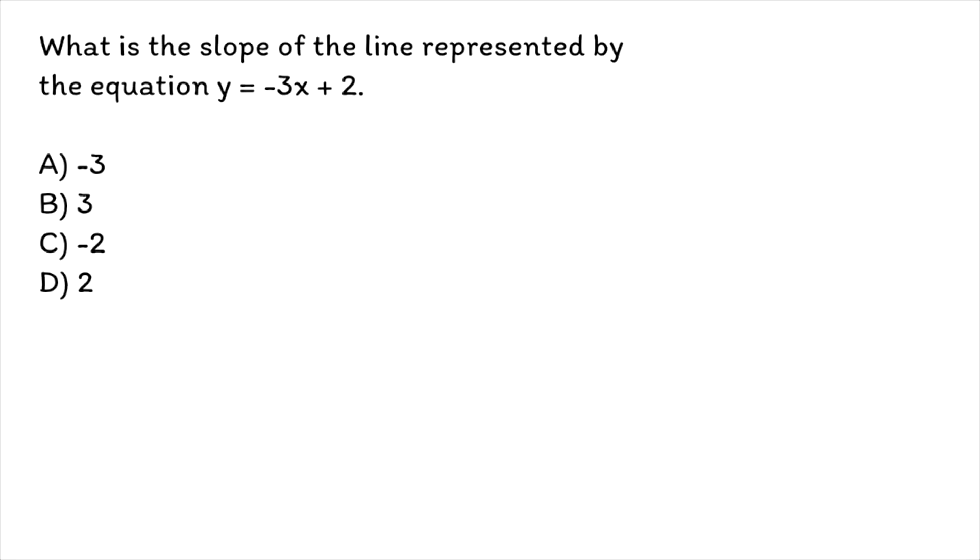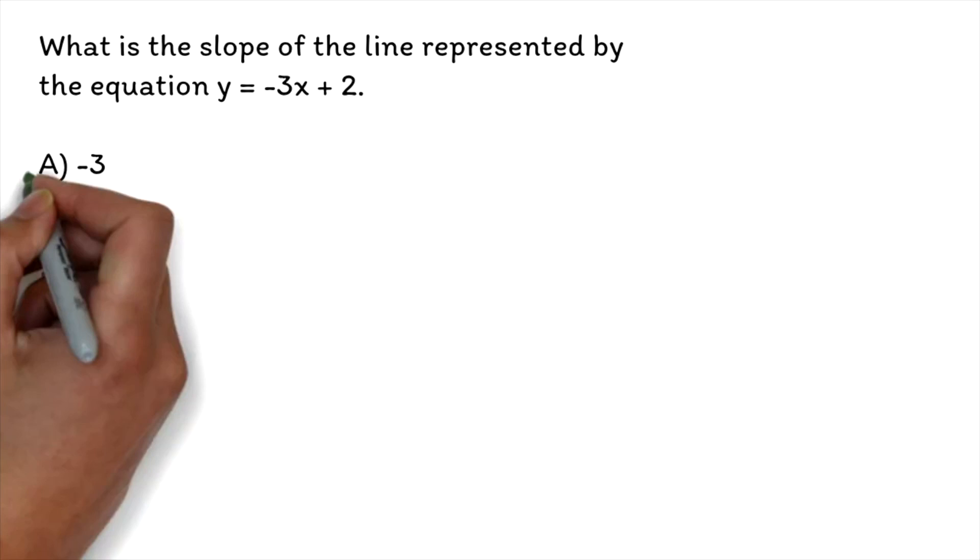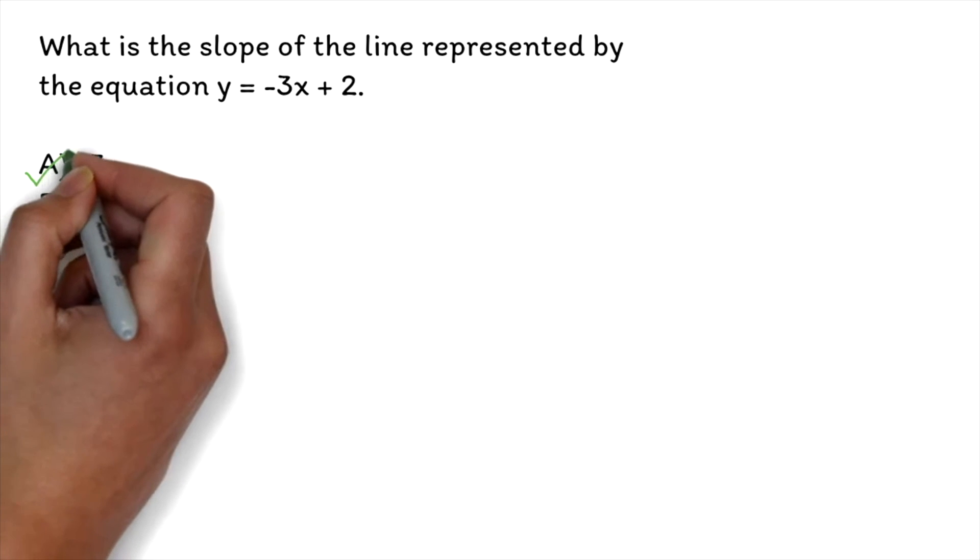What is the slope of the line represented by the equation y = -3x + 2? A) -3, B) 3, C) -2, D) 2. The correct answer is A, -3.